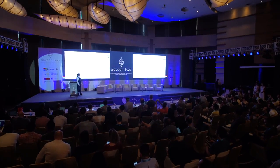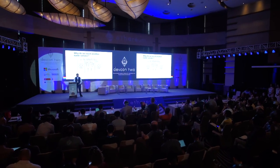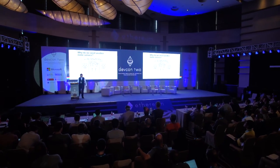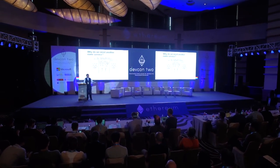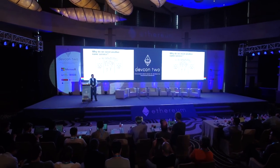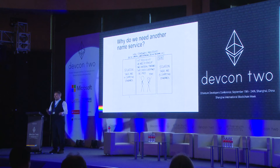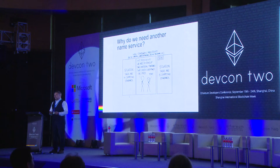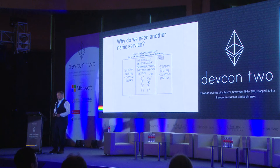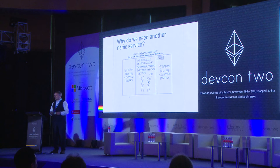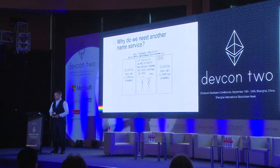The first thing you're probably asking is why do we need another name service? Why do we need a name service at all? Our goal is to be able to name users' wallets, to name contracts, and to name resources on Swarm and IPFS. And as DNS has demonstrated, there's a vast number of other uses for a good and robust name service.